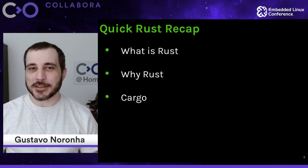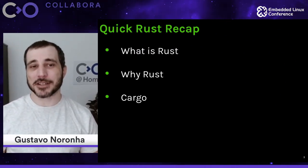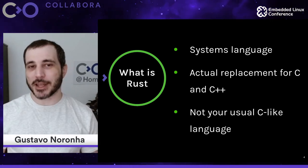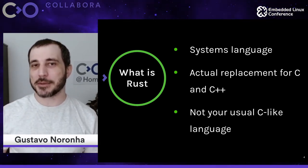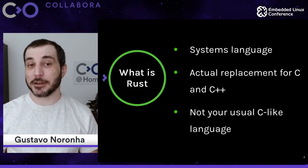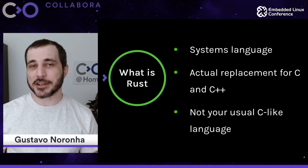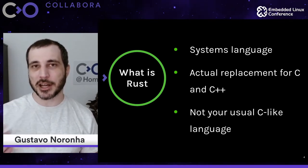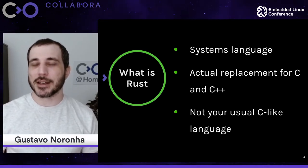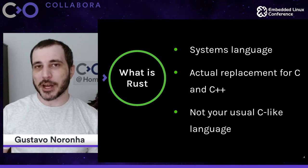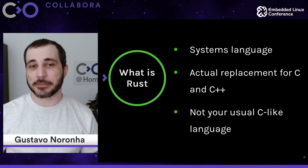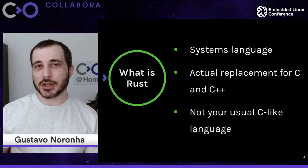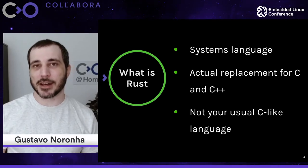So what is Rust? Why Rust and Cargo? Rust is a systems language — an actual replacement for C and C++. It's compiled, provides zero cost abstractions, it's very fast, and it's very easy to interop with a C API, so you can use C libraries and existing infrastructure. It doesn't have runtime overhead like languages like Go, which means it's also embedded friendly — you can even use it in boards or systems that do not have an allocator.